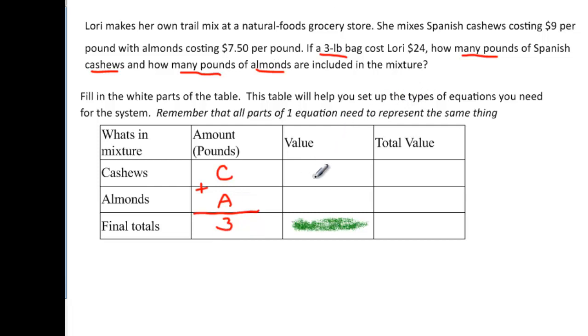All right, now we need to talk about values. Well, the value of the cashews up here says that it's $9 per pound. So we have $9. And the almonds cost $7.50 per pound. So that would be 7.5. We don't need to have a value of the total yet because that is in the next column. So now we have a total value that we need to think about. The total value here is the amount times the value is equal to the total value. So we have 9C, since we're used to putting the number first, and we have 7.50A. And then we have the total that we're spending or the total value of that bag is $24.